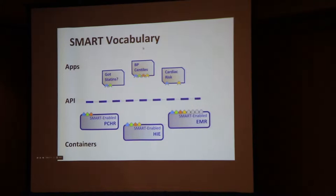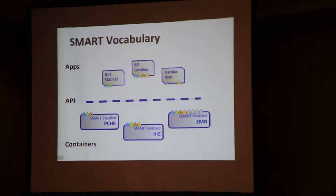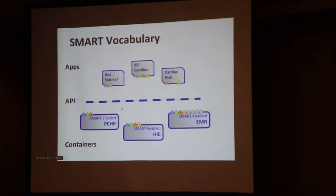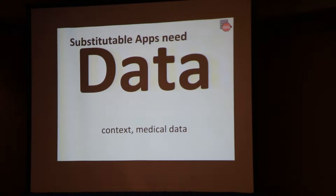A couple of quick pieces of vocabulary. Apps are individual units of functionality that provide an end user some immediate function — for example, an app that tells whether a patient is taking a statin drug, or one that calculates cardiac risk, displays a growth chart for a pediatric patient, or analyzes blood pressures. Smart containers are health IT systems like an EHR, PHR, or data mining platform that have individual patient-level health data and expose them through the SMART API. Apps talk to containers through the SMART API.